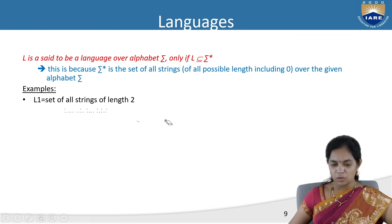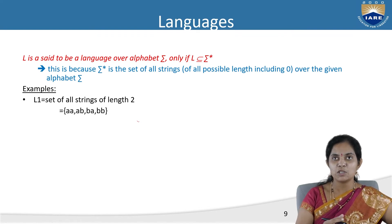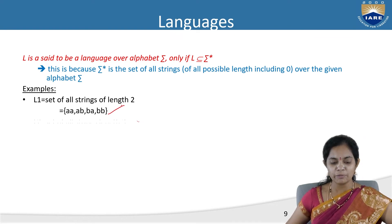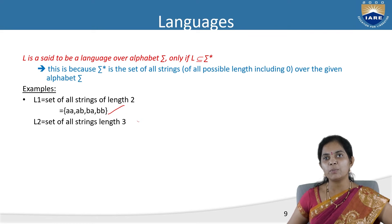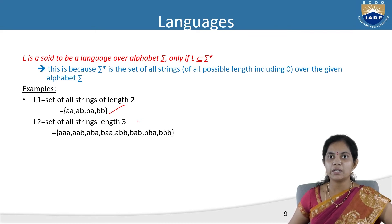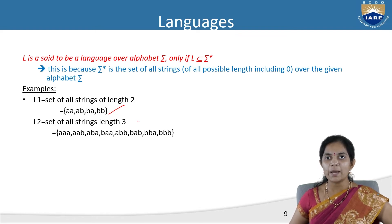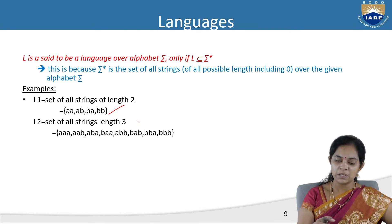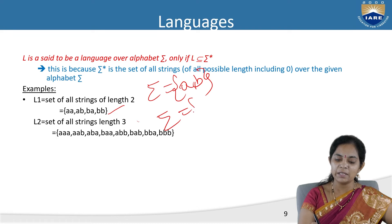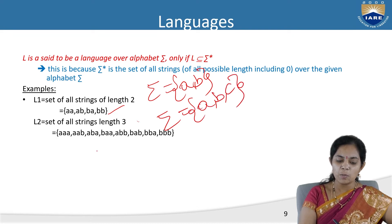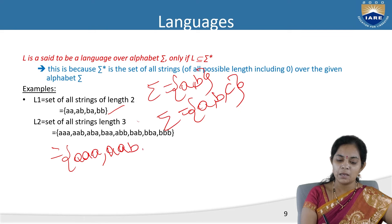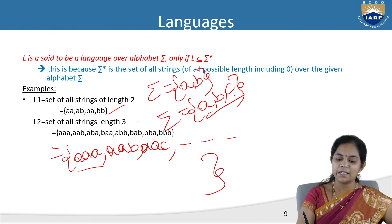The next example, L2, is the set of all strings of length 3. The possibilities include aab, aac, and so on. If sigma contains {a, b, c}, we can have strings like aaa, aab, aac, and many more combinations with these three alphabets.